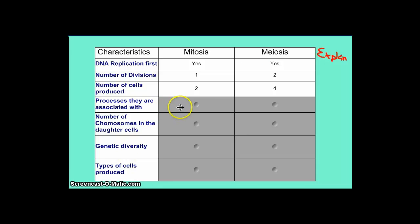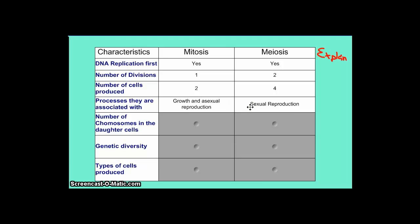The processes they are associated with: mitosis is associated with growth and asexual reproduction because it keeps the same number of chromosomes as the original cell. Your cells can replicate and still maintain their chromosome number, which is critical. The same is true in asexual reproduction — the cells at the end must have the same number as the original parent. Meiosis is associated with sexual reproduction because it divides the total number of chromosomes from the parent cell in half, so the sex cell can combine with another sex cell to return the chromosome number to the original total.